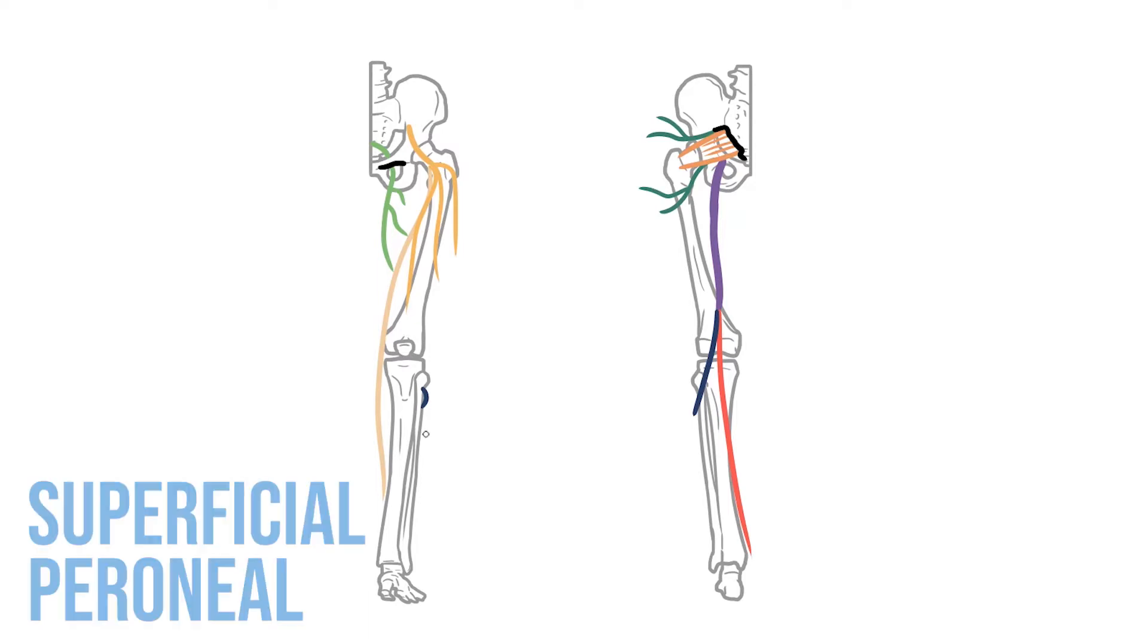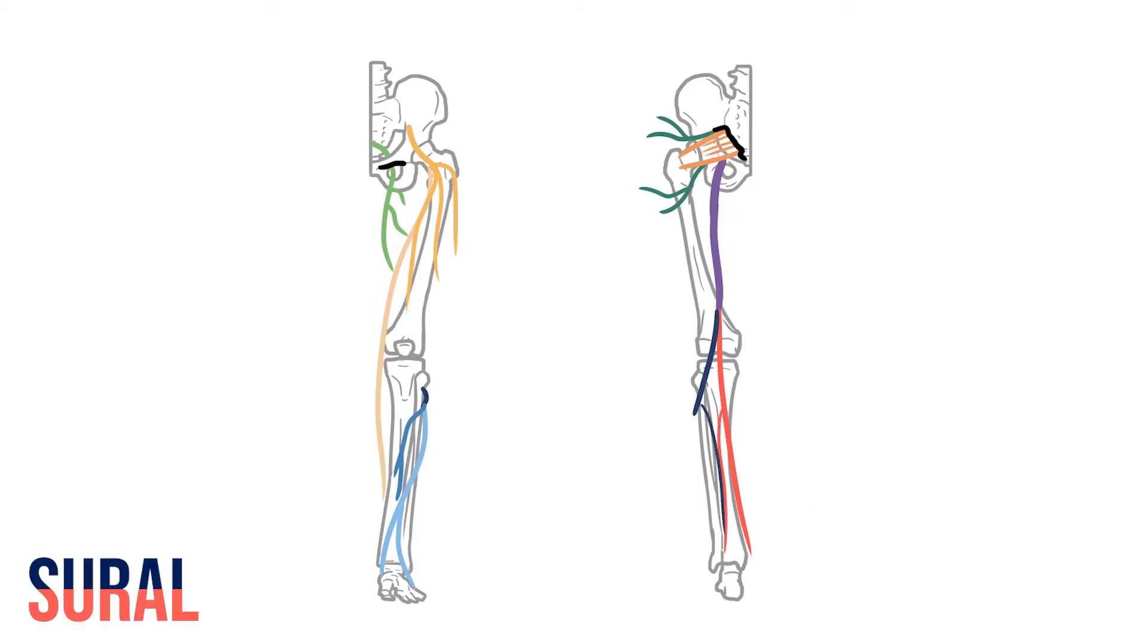The superficial peroneal branch travels through the lateral aspect of the leg and onto the dorsum of the foot. Meanwhile, the deep peroneal branch continues into the anterior aspect of the leg. Finally, small branches from the tibial and common peroneal nerves unite to form the sural nerve, a superficial nerve found on the back of the leg.